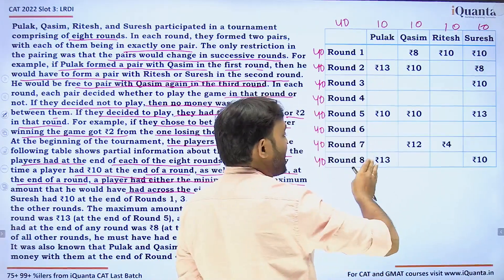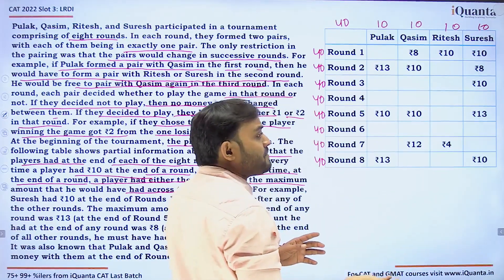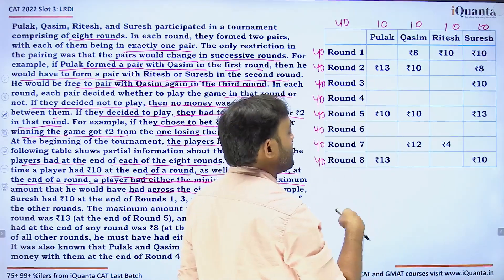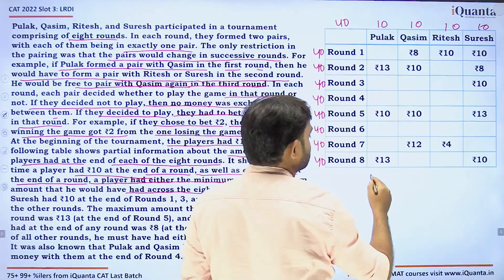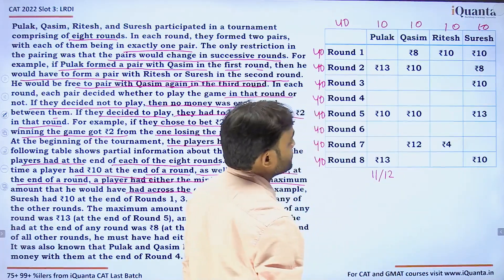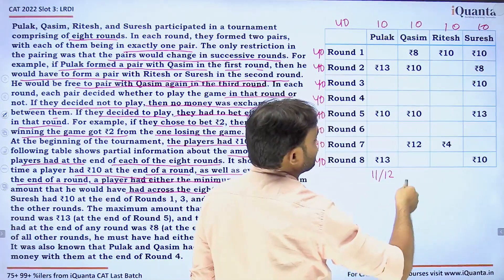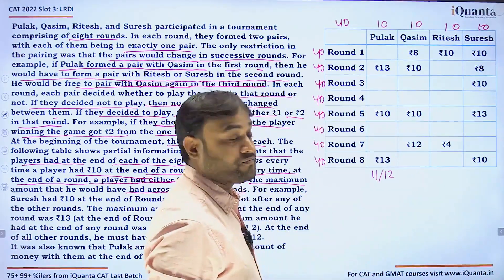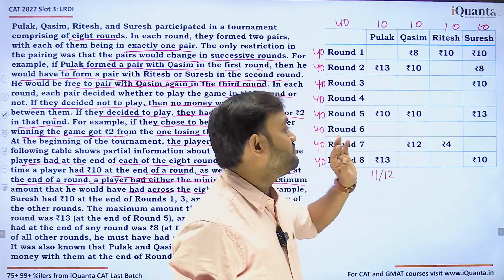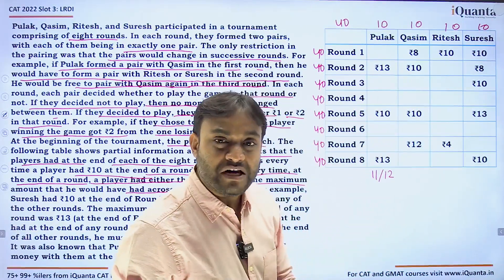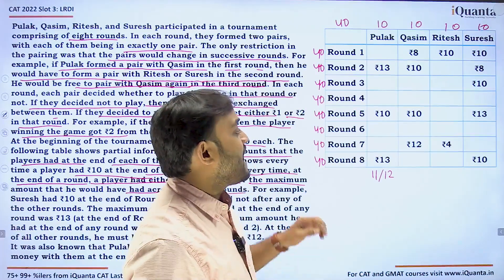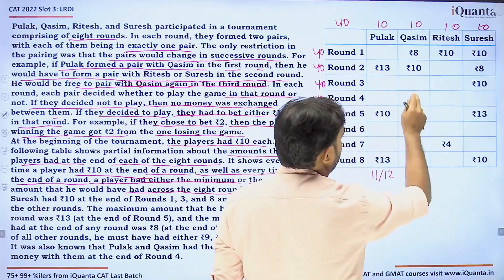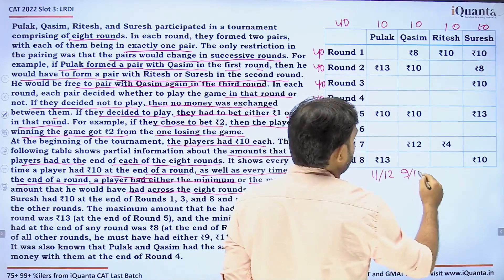For Pulak, the maximum amount he had is 30 and there is no minimum shown, so 10 is effectively the minimum — meaning the only other amounts we can place for Pulak are 11 or 12. For Kasim, we see 10, 8, and 12; the maximum with him is 12 and minimum is 8, so the remaining unfilled boxes can only be 9 or 11.